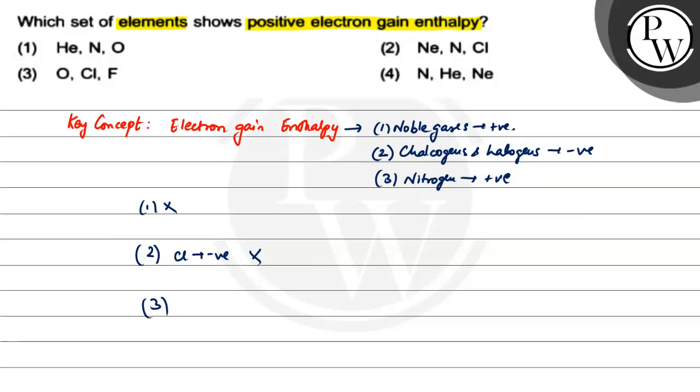Third option, they have oxygen, chlorine and fluorine. All of them have negative electron gain enthalpy. Therefore, this cannot be the option.